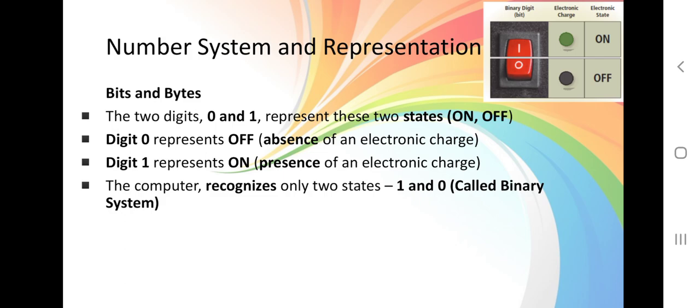Bits and bytes. The two digits 0 and 1 represent these two states on and off. Digit 0 represent off, absence of an electronic charge.